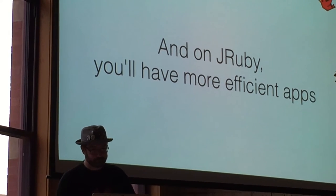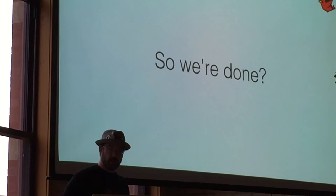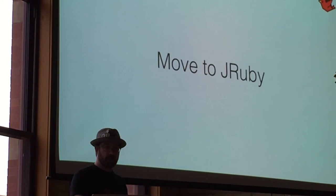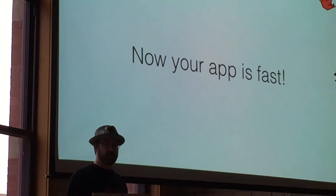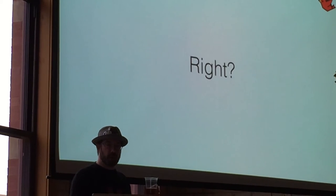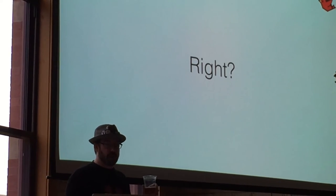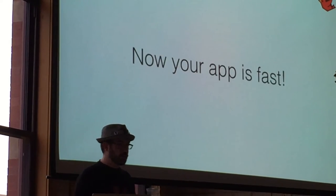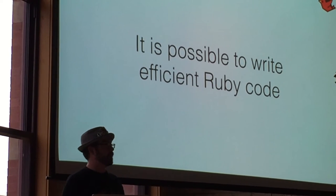So, we're done, right? We've got high performance, we've got good parallelism. Move to JRuby, application's going to be fast, and we're good to go, right? Well, it is possible to write good, efficient, and parallel Ruby code and write really good applications the first time you write. But it's also extremely easy to write really inefficient Ruby applications and really bad applications.